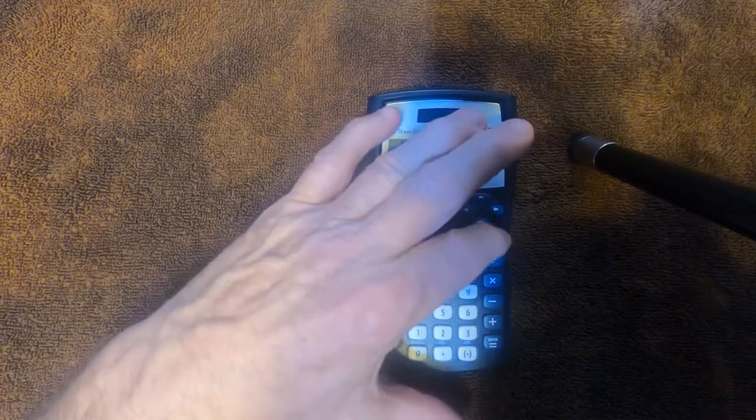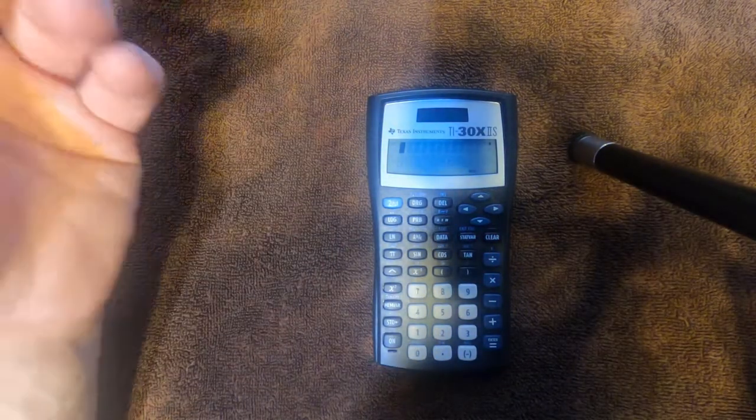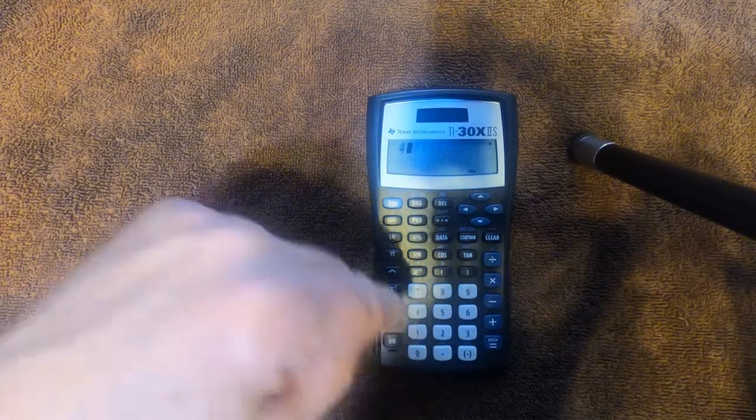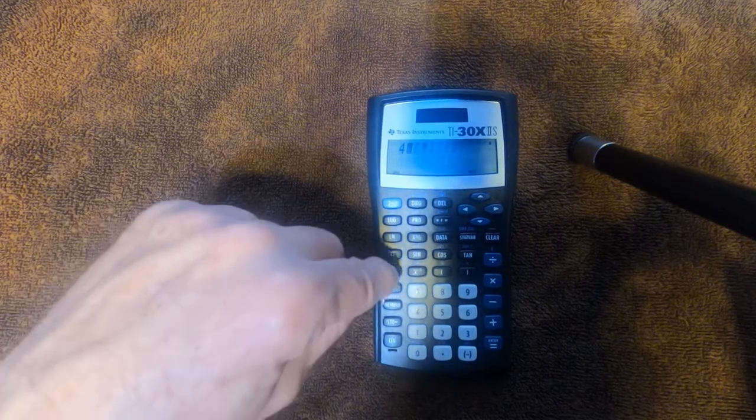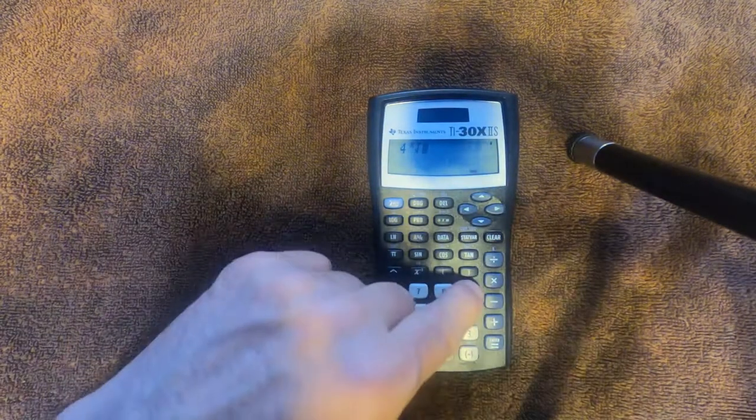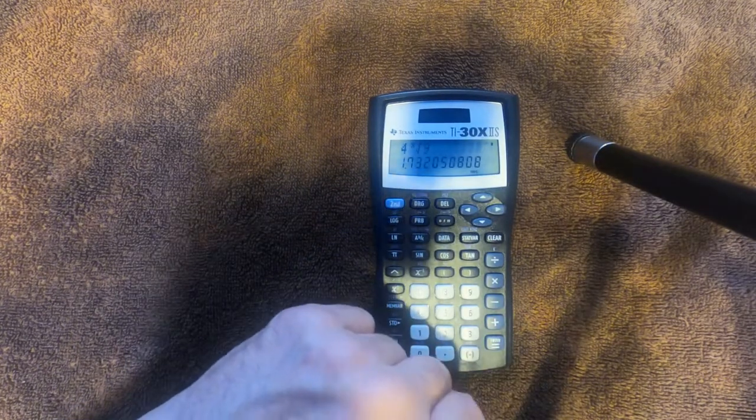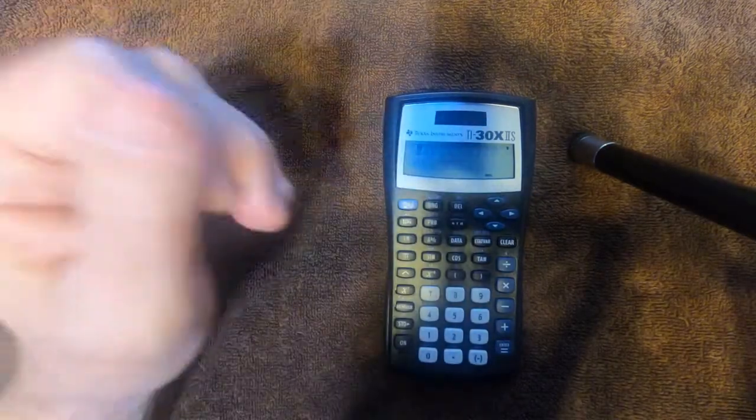If we want to take a root that's not a square root, let's say a 4th root, the 4th root of 9. Press the root first, so the 4, then see that x root right there, second x root, and then the number we want to take the root of, 9, enter, and there it is. So that's the roots, that's the powers.